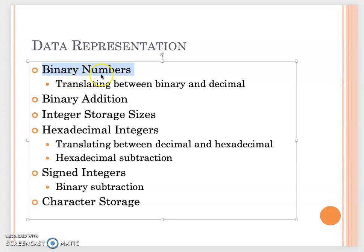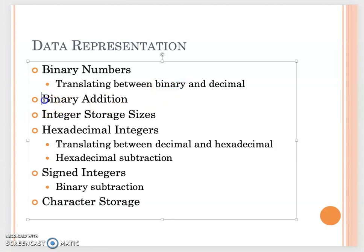We'll see what a binary number is and how to convert between binary and decimal. The decimal number is our human-readable number — we start from 1, 2, 3, 4, 5, up to 10, then 11, and continue counting. But in the computer world, we only have binary numbers: 1 or 0. Then we'll talk about binary addition. In the next video, we will cover hexadecimal and how to convert between decimal and hexadecimal.